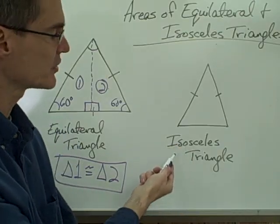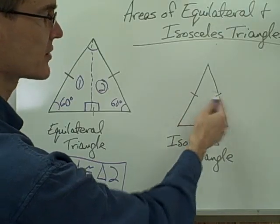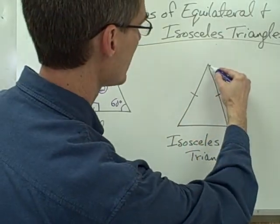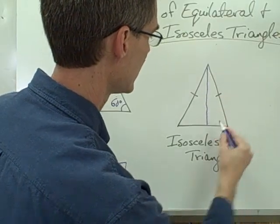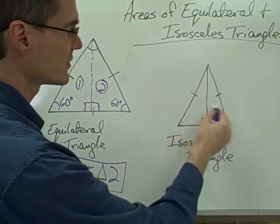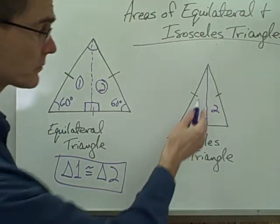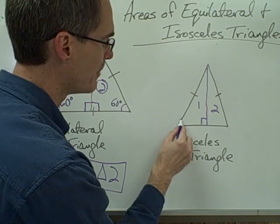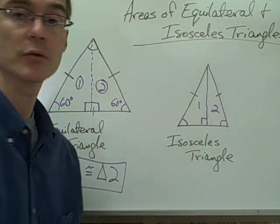Let's take a look now at an isosceles triangle. These two sides are marked congruent — those are my two congruent sides. If I draw in an altitude on this triangle, I notice again that this divides the triangle into two smaller triangles. One of the things I know about an isosceles triangle is that the base angles are congruent.